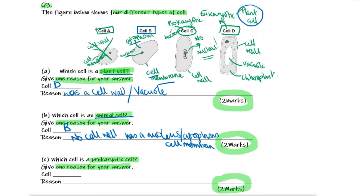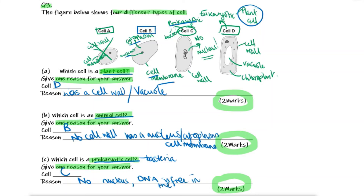Those are the basic structures of an animal cell. Which cell is a prokaryotic cell? The prokaryotic cell is a bacteria cell, so we've identified cell C as our prokaryotic cell. One of the main reasons is that there is no nucleus — the DNA is free in the cytoplasm.